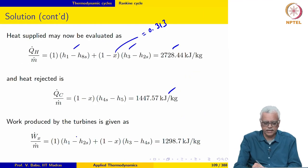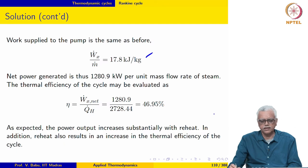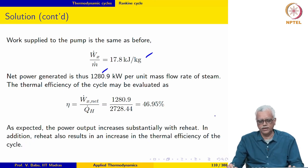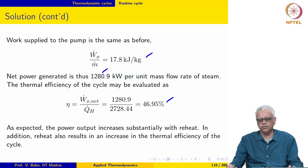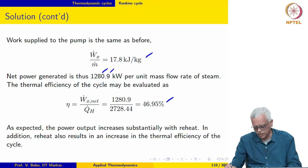The work produced by the turbines — now we have a high pressure turbine and a low pressure turbine — is 1298.7 kJ/kg compared to 1096 kJ/kg without reheat. Work supplied to the pump is the same as before. The net power generated is 1280.9 kW per unit mass flow rate of steam, which is higher than before. The thermal efficiency is now about 47 percent. We have managed to retain the benefit of higher thermal efficiency, and the power output is definitely higher as expected.